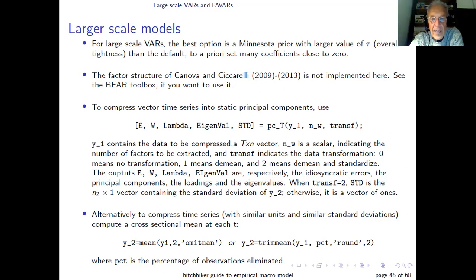Another thing you can do in the toolbox is to separate two sets of variables: the one that you want to consider and the one that you think are auxiliary. You may want to compute factors out of the auxiliary variables and then jointly use the variables you care about and the factors inside your VAR. There are different ways of computing factors. The simplest possible way is to use static principal components, which are basically implemented with this command PC underscore T. Where Y1 is the data, N1 is a scalar indicating how many factors you want to use, and TRANSF is the transformation you want to use. Zero means no transformation, one you want to demean, and two to demean and standardize.